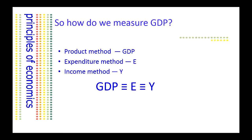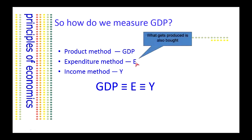So how do the national income accountants actually measure GDP? The first way, notionally, would be to go around to each factory and office where products and services are produced, and add up the final value of those goods and services. However, that's rather impractical. In general terms, it's the expenditure and income methods which are most commonly used. The expenditure method gives rise to total spending in the economy, and is based on the idea that what gets produced — namely GDP — will also get purchased.